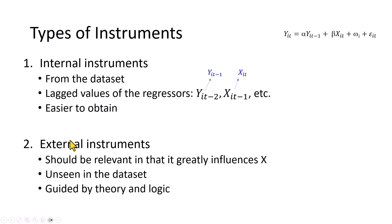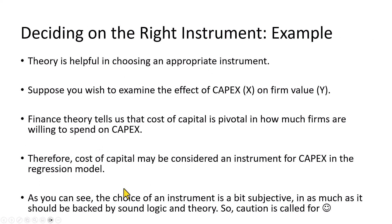External instruments are a bit tricky and must be guided by some theory or logic. For example, if you wish to examine the effect of capital expenditure on firm value, finance theory tells us that cost of capital is very important in how firms make decisions concerning how much they spend on capital expenditure. So as you would imagine, as cost of capital rises, other factors held constant, firms are going to be less likely to spend money on capital expansion. So cost of capital may well be viewed as an instrument for capital expenditure.